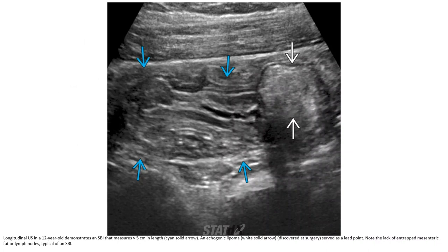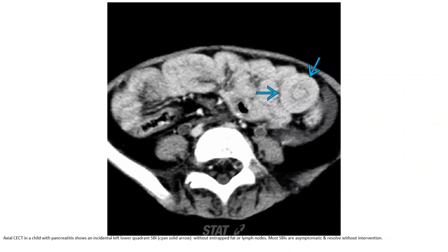On CT in a 12-year-old, a small bowel intussusception is demonstrated that measures more than 5 cm in length, with a colic-like bowel mass serving as a lead point. Note the lack of intramural mesentery wedge or lymph nodes. Another case shows an incidental left lower quadrant small bowel intussusception without trapped fat or lymph nodes — most small bowel intussusceptions are asymptomatic and resolve without intervention.